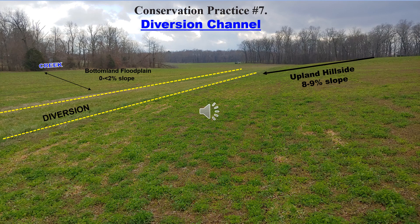A diversion has a lot of similarities to practice number five — grass waterway, mechanical drain, or other safe water disposal systems. They both involve having a well-established grass sod, they both have a concave shape, and they both involve moving water safely from point A to point B.